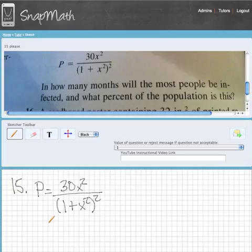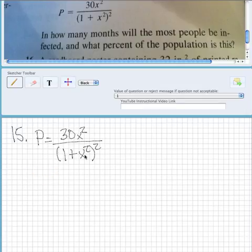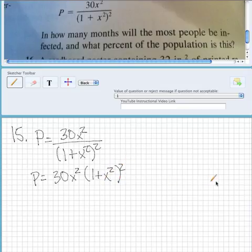So what they ask is when is the percentage the highest of people infected with this disease in this population. What we want to do is take the derivative of this and then set it equal to zero and solve for zero, and then we can find the maximum of the function. Then what we'll do to find the percentage is plug that back into our original equation.